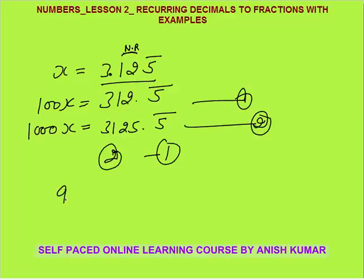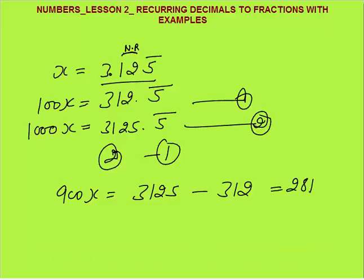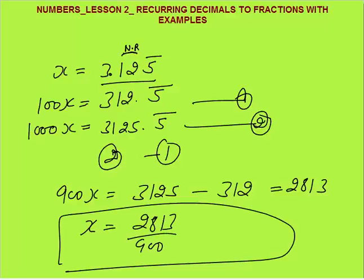900x equals 3125 minus 312, which is 2813. So x equals 2813 by 900. This is your fraction in the form P by Q — it is a rational number. If you calculate 2813 by 900 on a calculator, you will get 3.125 repeating.